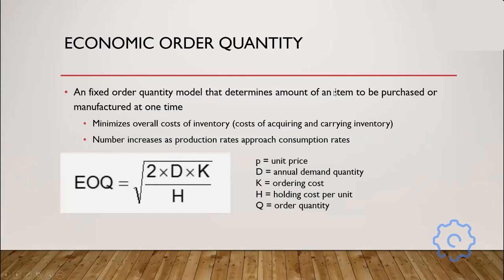This is where economic order quantity, or EOQ, comes in. EOQ is a fixed order quantity model that determines the amount of an item to be purchased or manufactured at one time. This model basically aims to maximize efficiency by minimizing the overall cost of inventory, which involves the cost of acquiring and carrying inventory. As the production rate approaches the consumption rate, the EOQ number tends to increase, because as you build something, you consume it.